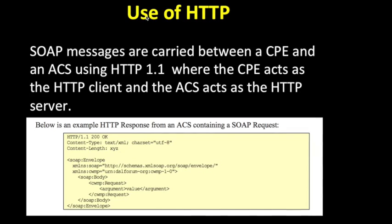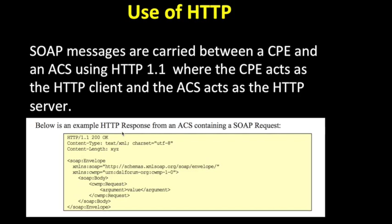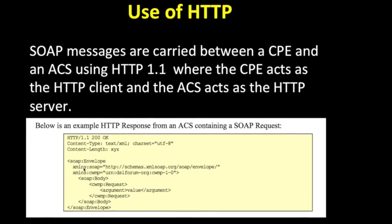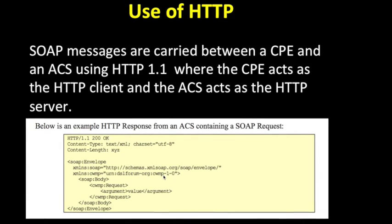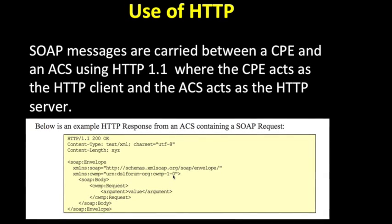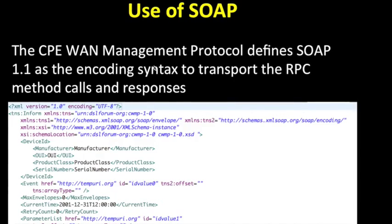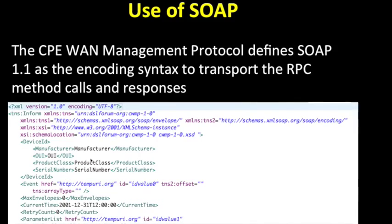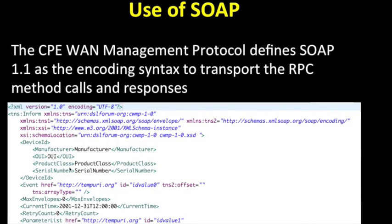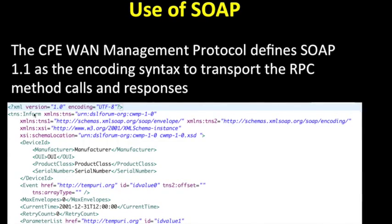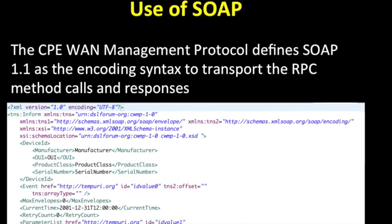Regarding the use of HTTP: SOAP messages are sent over HTTP. We form a SOAP envelope based on the CWMP schema version 1.1. The use of SOAP is to define the RPC method being invoked. This is a sample XML for performing an Inform, including the device ID and parameter list.